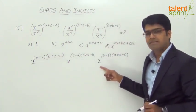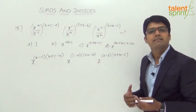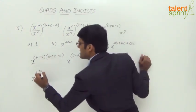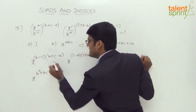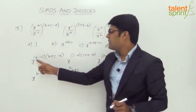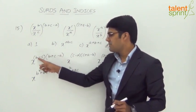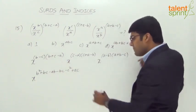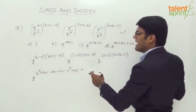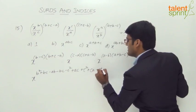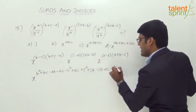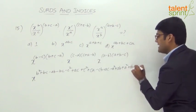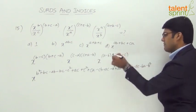Since all bases are x and the terms are multiplied, the powers can be added. Expanding the first product: b²+bc−ab−bc−c²+ac. The second product: c²+ca−cb−ac−a²+ab. The third product: a²+ab−ac−ba−b²+bc. Now we add all these powers together.